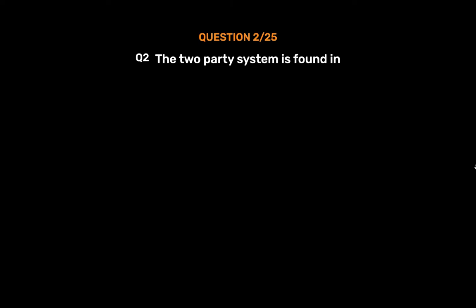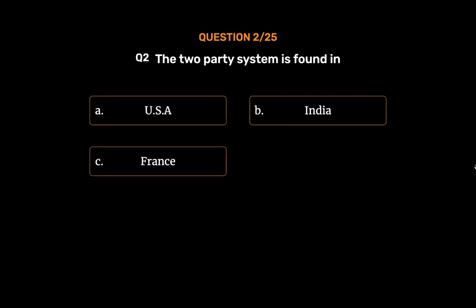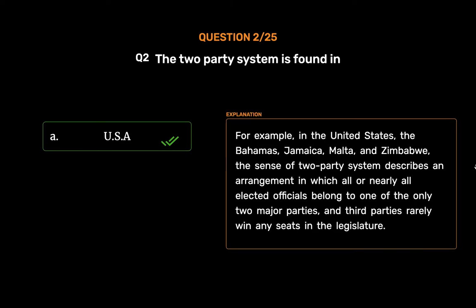Question No. 2: The two-party system is found in — Option A: USA, Option B: India, Option C: France, Option D: Russia. The correct answer is Option A, USA. For example, in the United States, the Bahamas, Jamaica, Malta, and Zimbabwe, the two-party system describes an arrangement in which all or nearly all elected officials belong to one of the only two major parties, and third parties rarely win any seats in the legislature.